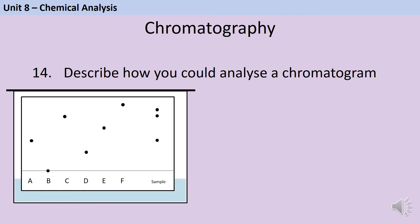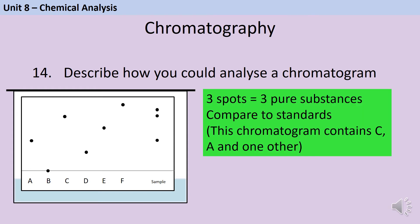To analyse the chromatogram, we want to look at how many different spots there are in the sample, and also compare these to the standards. So the first thing I would say when looking at this chromatogram is that the sample contains three different spots, and therefore it contains three pure substances, such as three different inks. Then, by comparing it to the standards, I would say that this sample contains A and it contains C, and it also contains one other ink that hasn't been shown here.